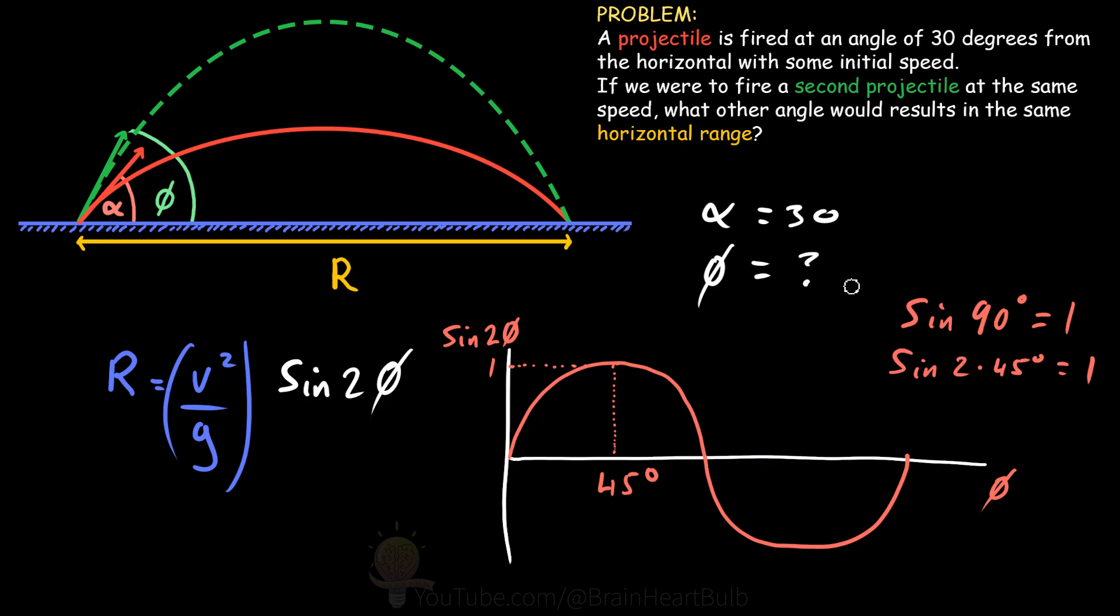Our red projectile up here has been fired at a 30 degree angle. And because this is the only term that affects our range, because these values here are fixed, all we need to do here is look at the symmetry of the sine curve about the 45 degree angle.